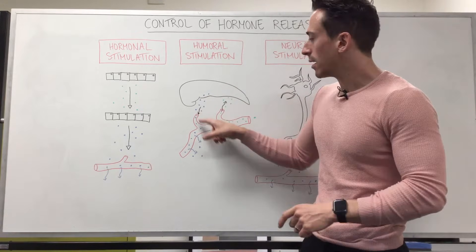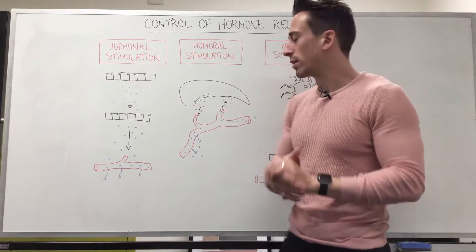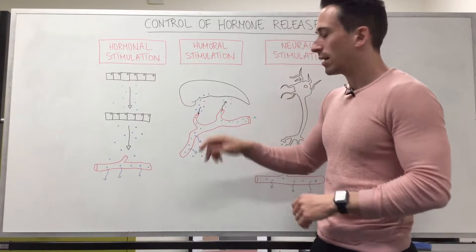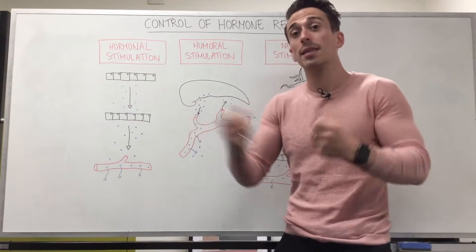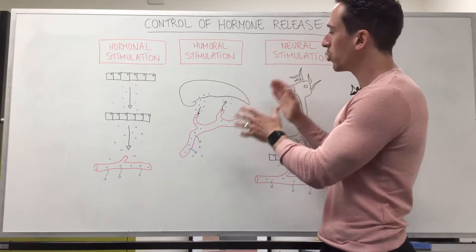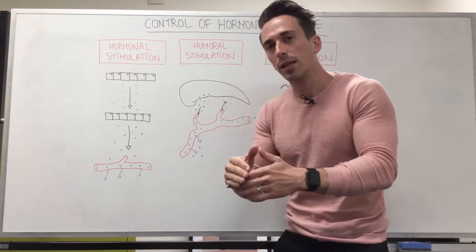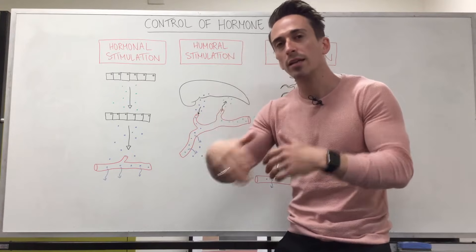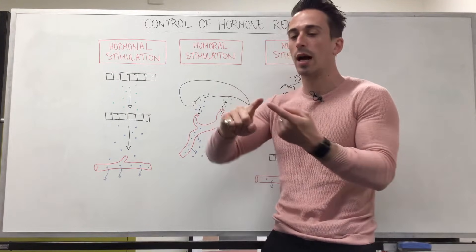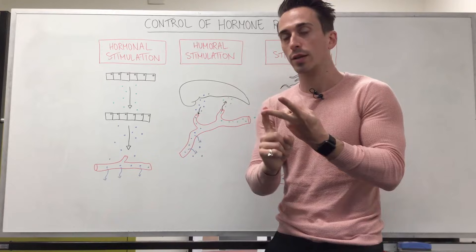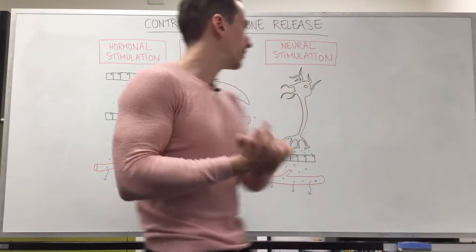This insulin is then delivered to widespread areas throughout the body, telling the cells to open up and let that glucose in. This is humeral stimulation — stimulated by things floating in the bloodstream, which are usually ions and nutrients. In this case, glucose is that nutrient.